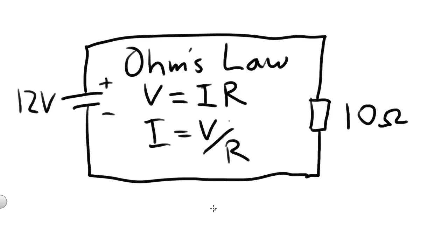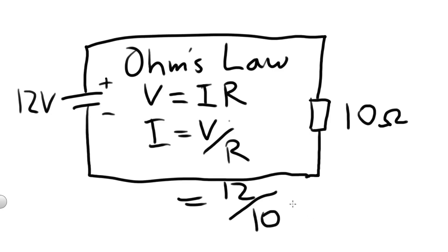So in this circuit, I will equal the voltage, which is 12, divided by the resistance, which is 10, which will equal 1.2 amps. So that's the current for this circuit.